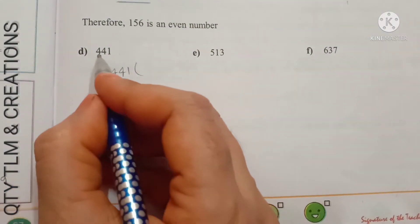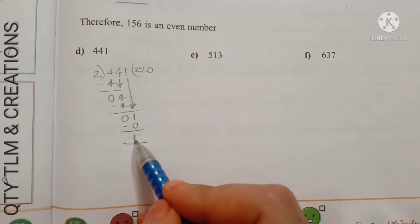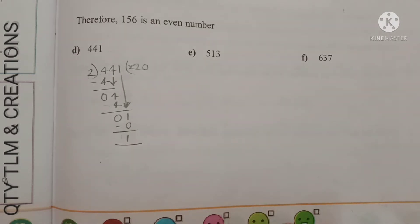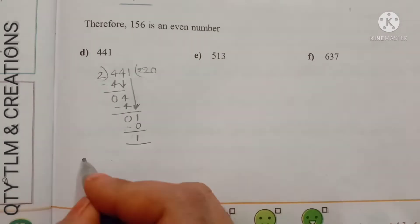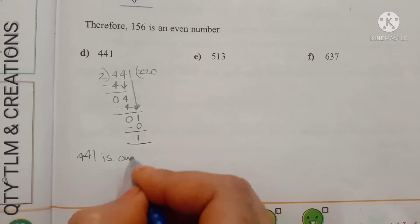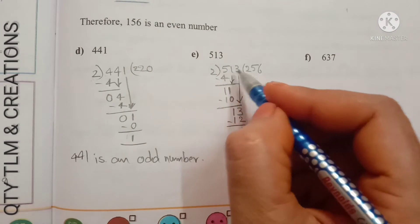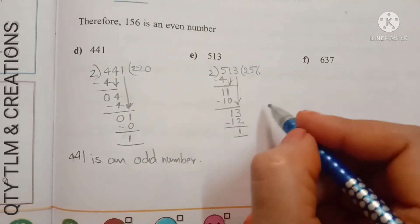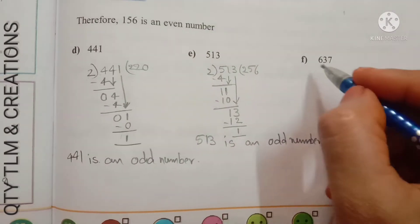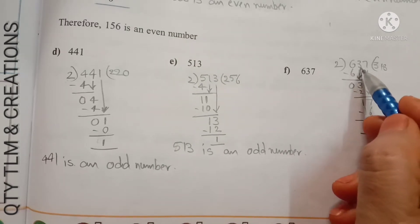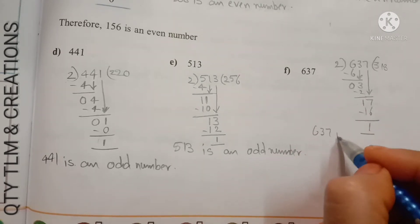Next: 441. When we divide 441 by 2, we get remainder 1. Remember — any number that cannot be divided exactly by 2 is called an odd number. So 441 is an odd number. Next: 513 divided by 2 gives remainder 1, so 513 is an odd number. And 637 divided by 2 gives remainder 1, so 637 is an odd number.